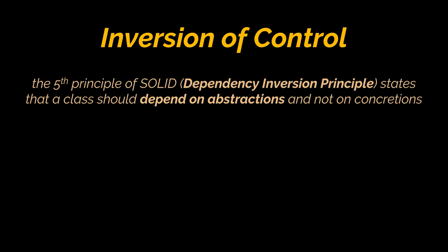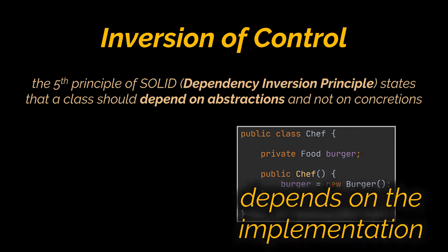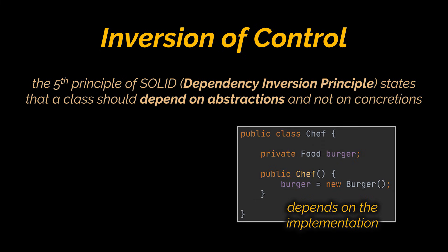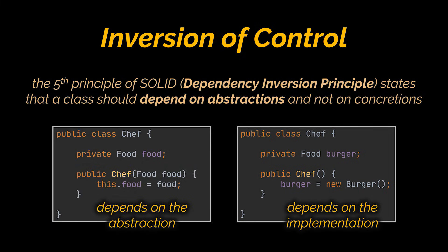This principle states that a class should depend on abstractions and not on concretions, and that is exactly what we did when we injected the Food class to the Chef class. If you recall, with a hard dependent code our Chef class was dependent on the implementation or the Burger class. However, when we use dependency injection we became dependent on the abstraction or the interface instead of the concretion.